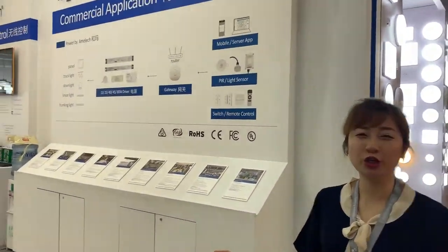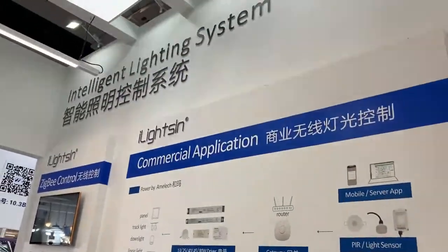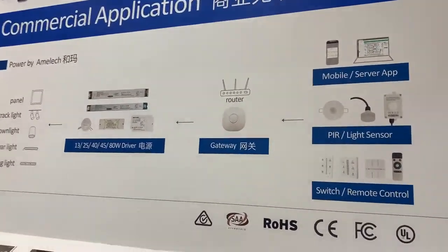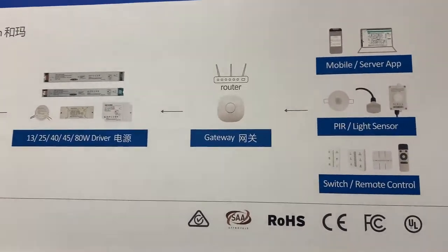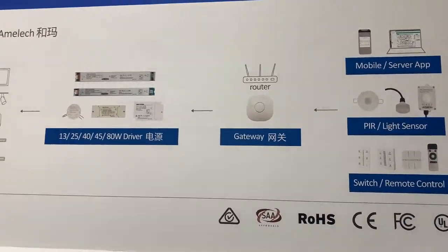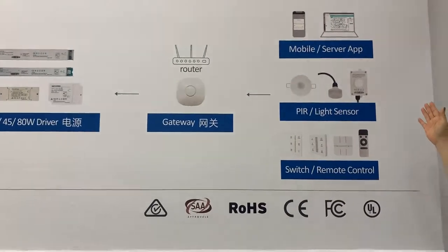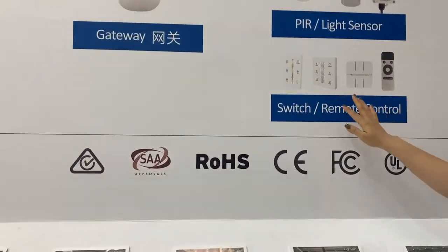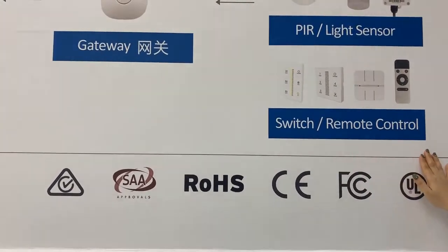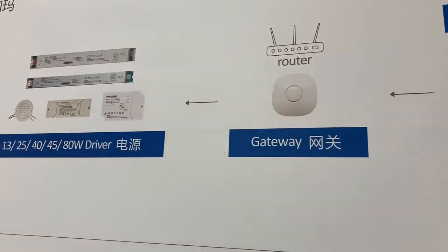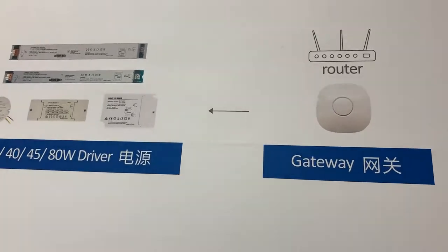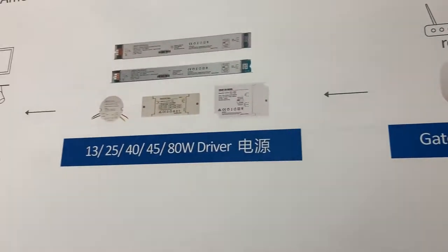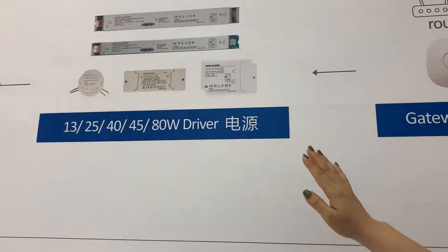Hi, I would like to introduce our Zigbee control system for commercial applications. As you can see here, these are the whole system. They offer a mobile phone app, server app, and different sensors — PIR sensor or light sensor — and the switch and remote control. Together with our gateway connecting to the router, all these commands come through the gateway to different types of drivers.